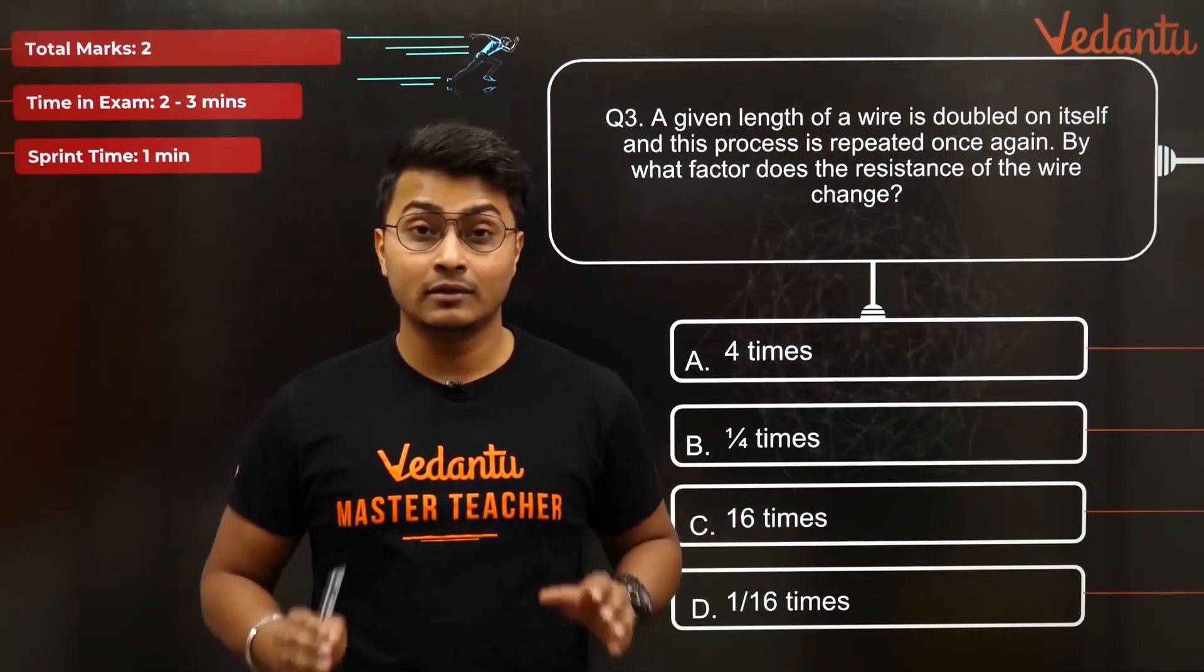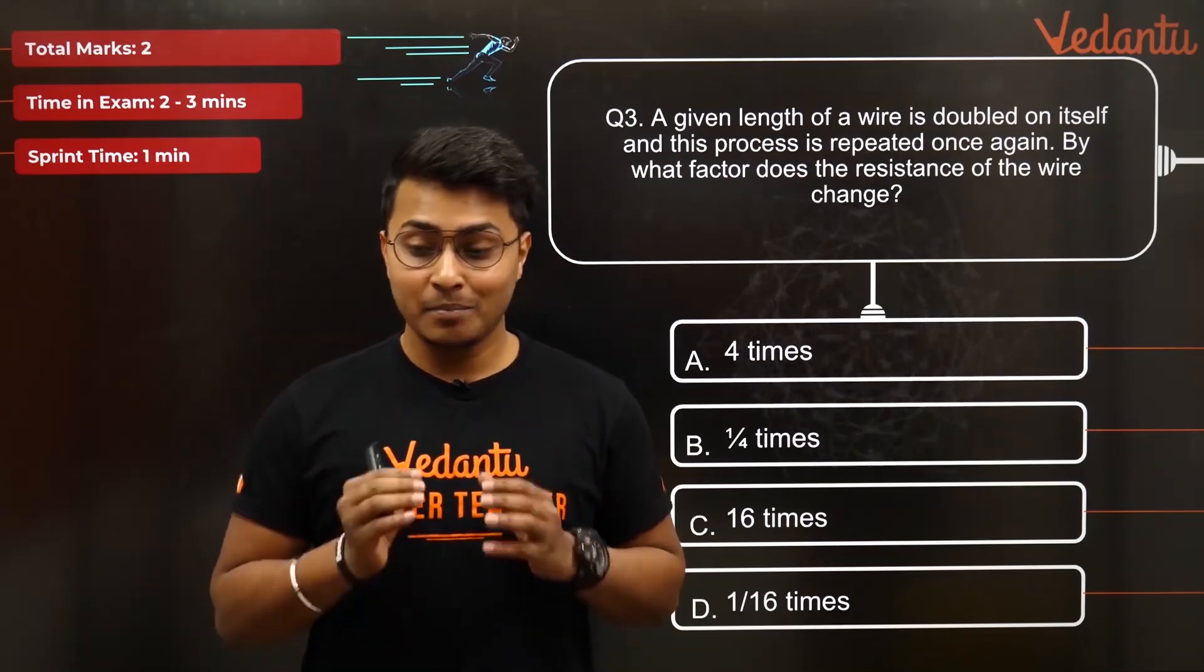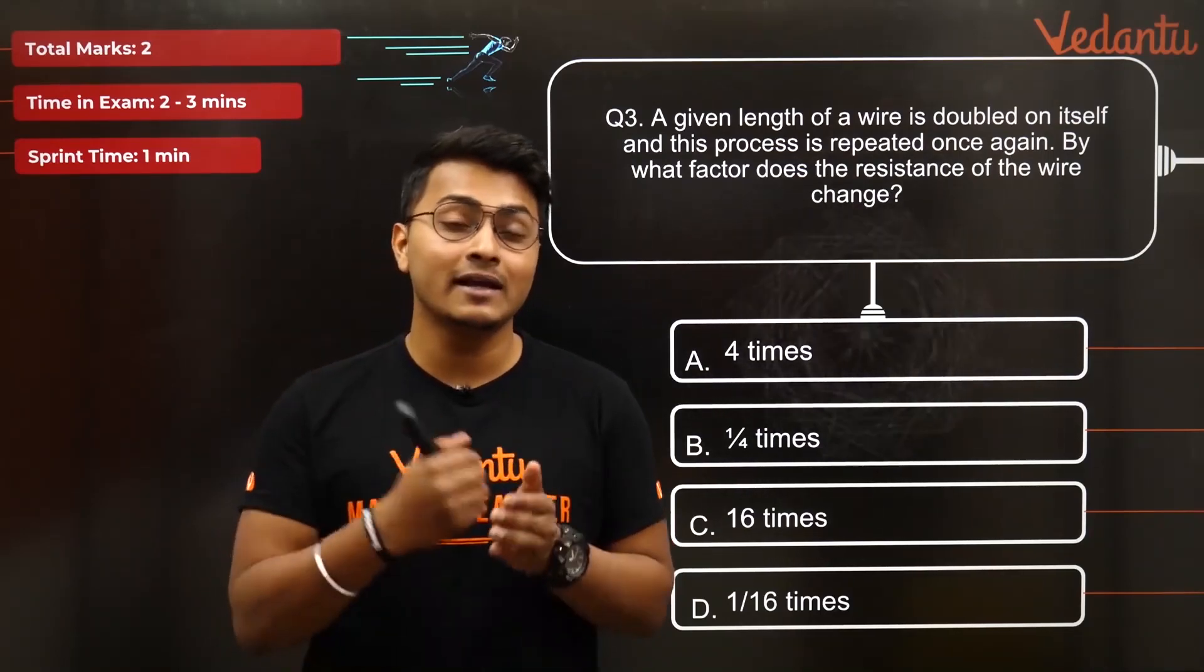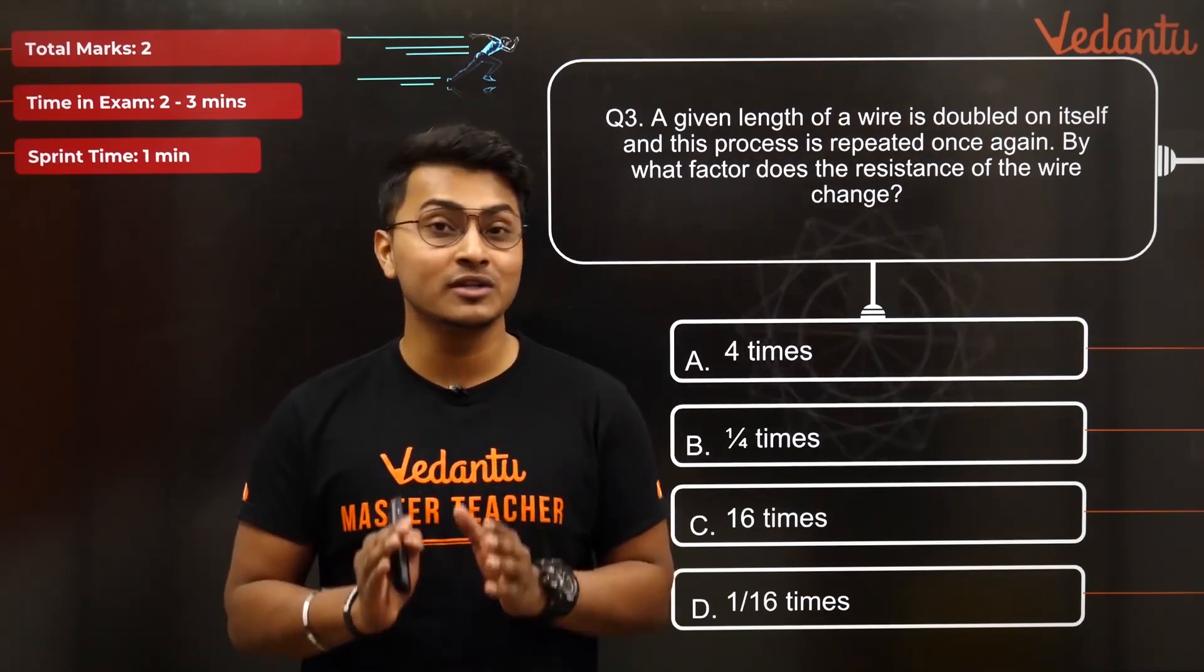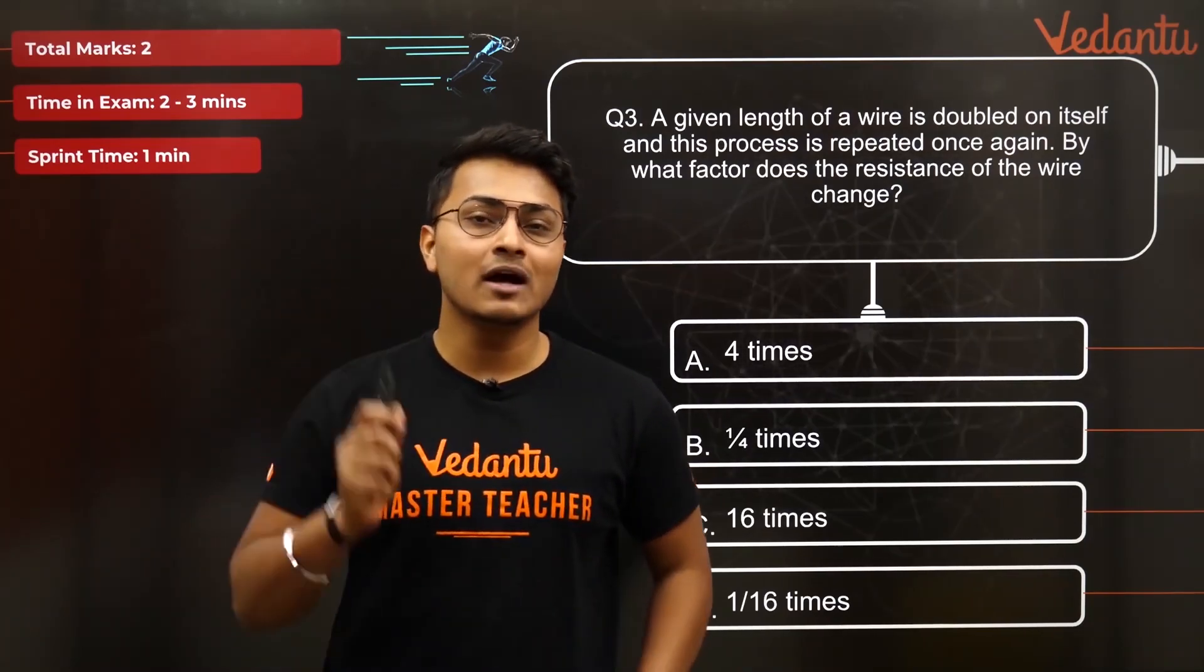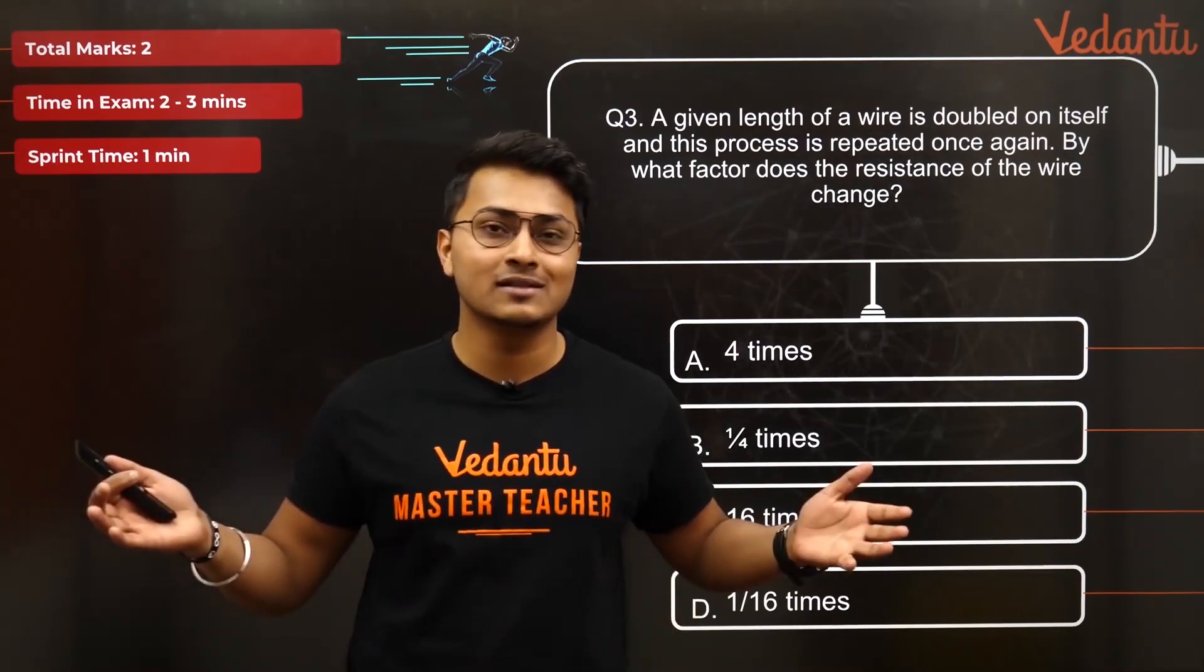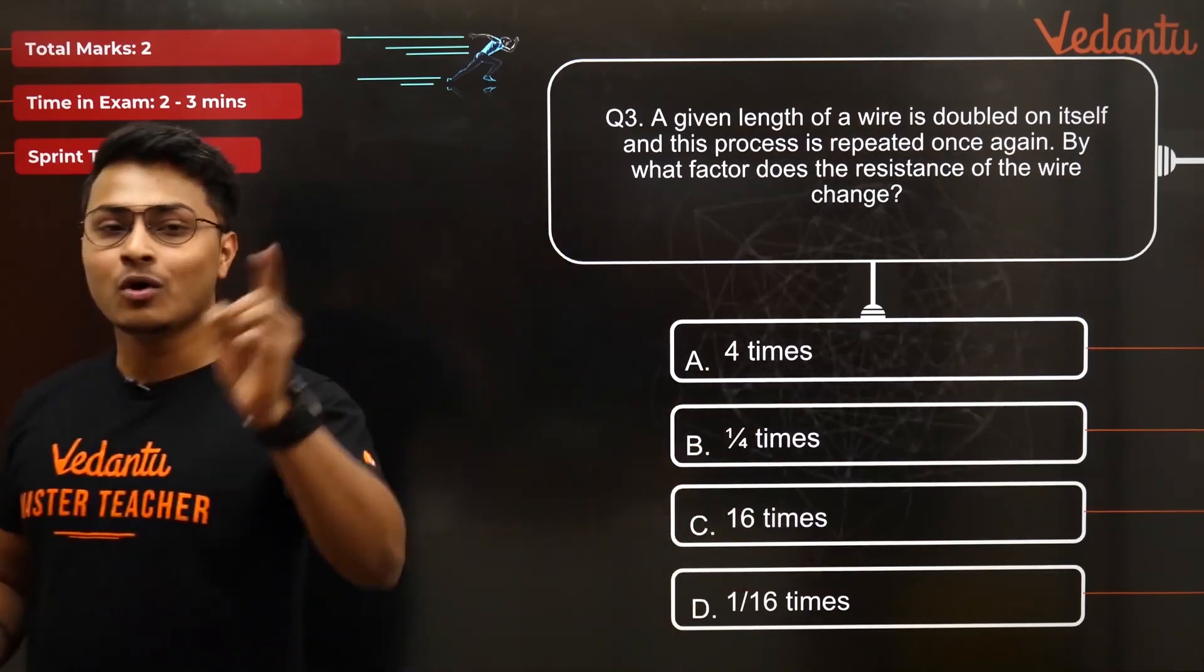This concept is pretty difficult to understand for a lot of students. And till now, whenever I take a new batch, I see that most of the students don't know about this concept. So go ahead, guys. You have total marks for this question is two marks. In the examination, it can take two to three minutes. But since this is a sprint, one minute for you. Go ahead.